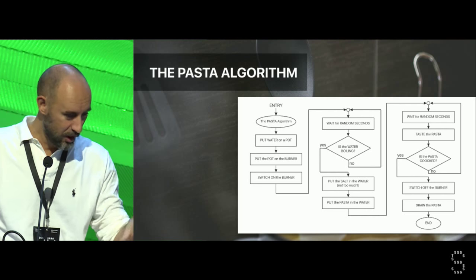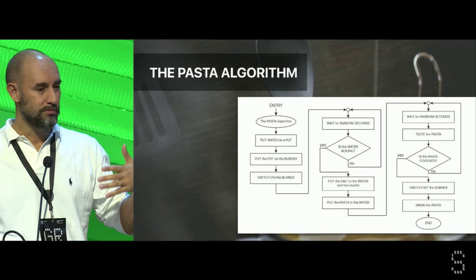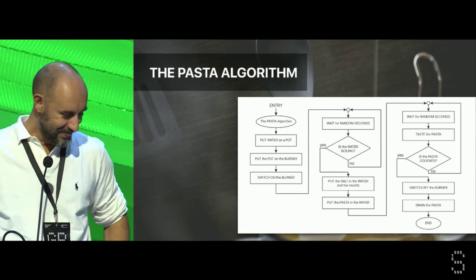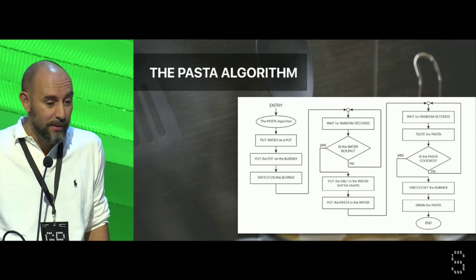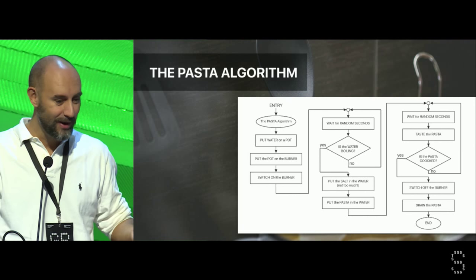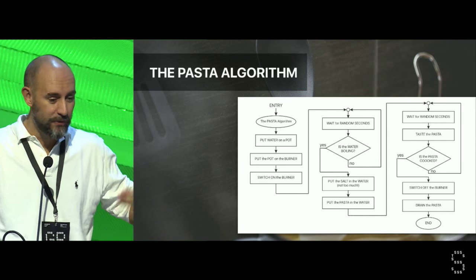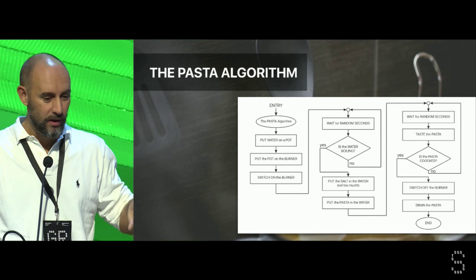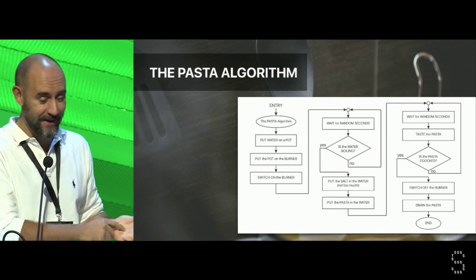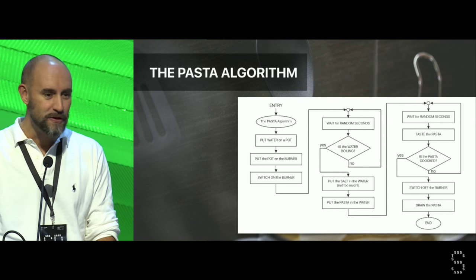One of the important parts of the pasta algorithm is when you check if the water is boiling, because water changes its boiling point according to many things — for example whether you are in the mountains or at home. So I do something like this: I wait a random number of seconds, then I check if the water is boiling. If not, I wait again. If yes, I put salt in the water — not too much, and very often nothing at all. Then I put the pasta in, and the second loop is verifying if the pasta is cooked. I wait a random number of seconds; I could read the cooking time on the package, but generally I do it like this.